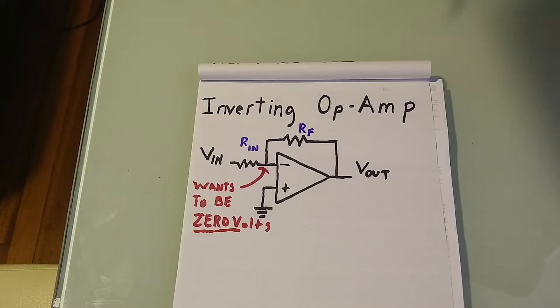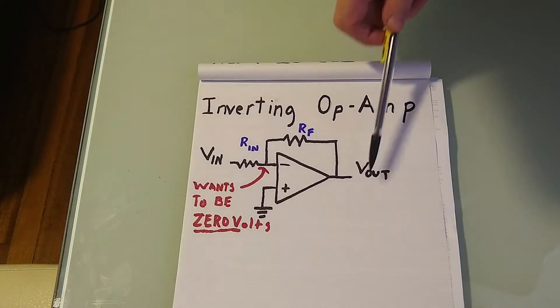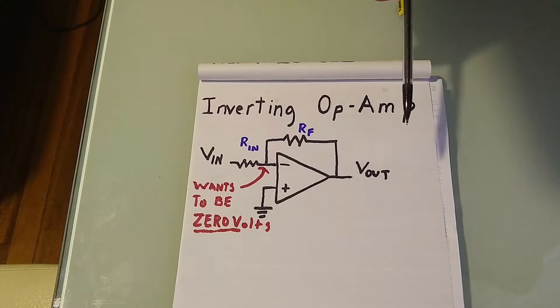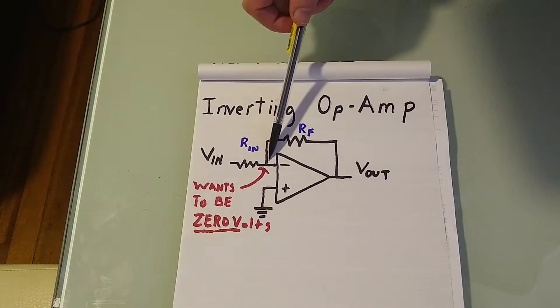So, if our Vin is one volt, and both Rin and Rf, our feedback resistor, are equal, then Vout will be equal to negative one volt to balance out the two voltages, leaving this at zero.